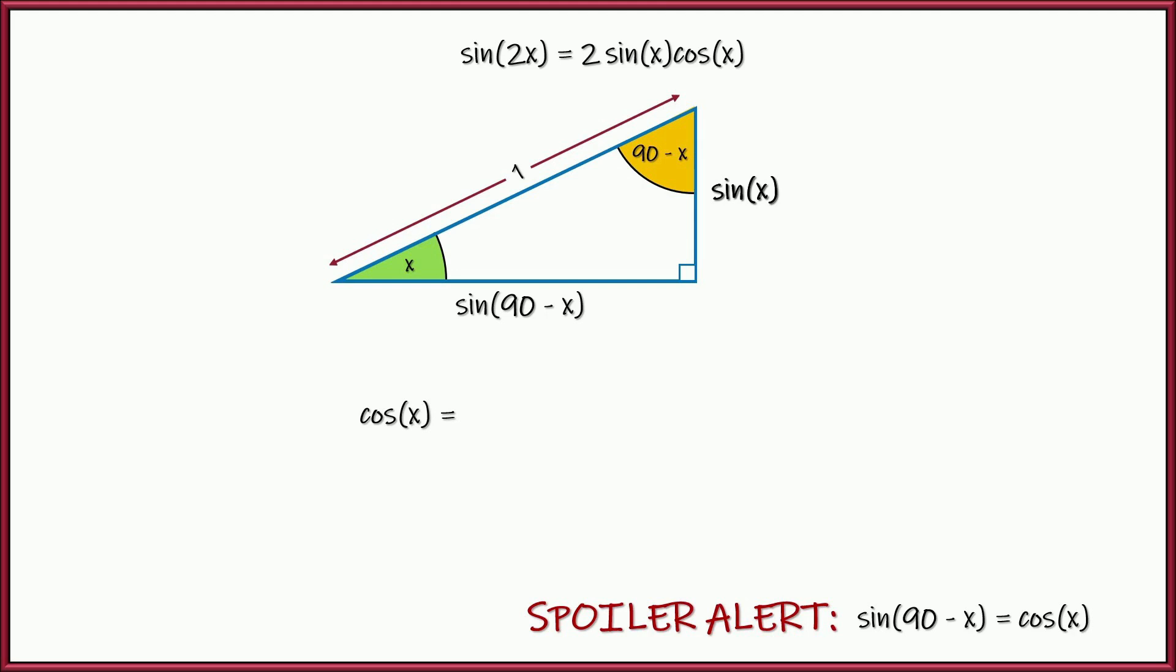Now, let's talk about the cosine of x. Cosine of x is the adjacent side divided by 1. Right? And the adjacent side is sine of 90 minus x. So cosine of x is equal to the sine of 90 minus x. All right. So we're going to use that in just a second.